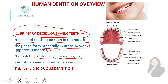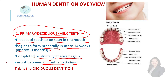These are the teeth of the upper arch and these are the teeth of the lower arch — the deciduous or milk teeth. They erupt in the oral cavity between 6 months and 3 years. When a child is 6 months of age, the first deciduous teeth appear, and by 3 years, all deciduous teeth are present.